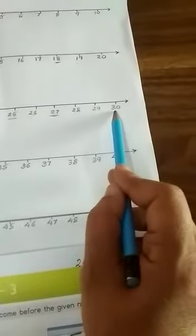Next, 31. Look at here, 31. So, what will come before this 31? 30. 30 will come.